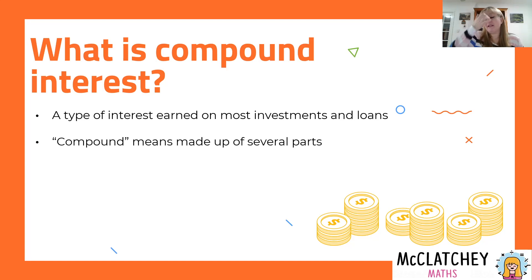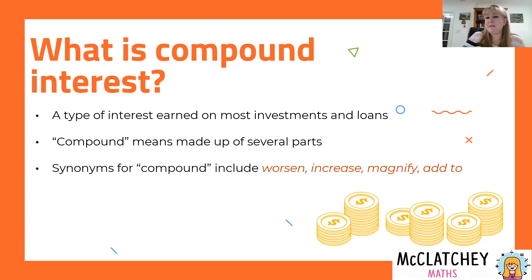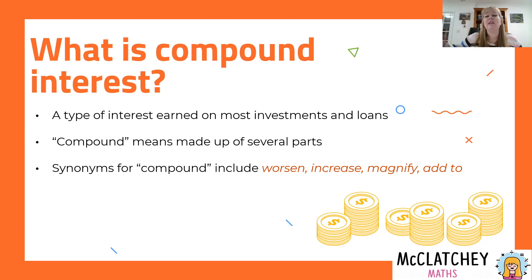The word 'compound' means it's made up of several parts. Some synonyms for the word compound include to worsen, increase, magnify, or add to. If it was the case of a loan, having compound interest is definitely worse than simple interest because we're earning interest on the interest, and it increases the value of the loan much faster than simple interest would. It magnifies your loan, makes it bigger.